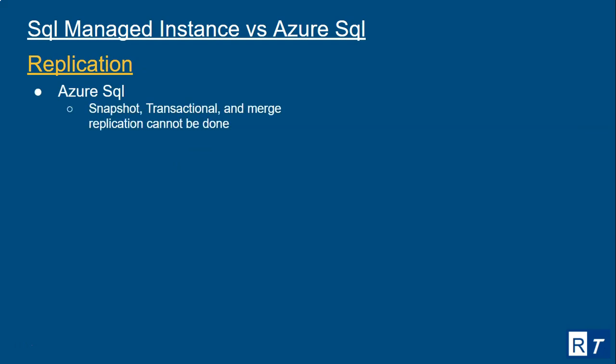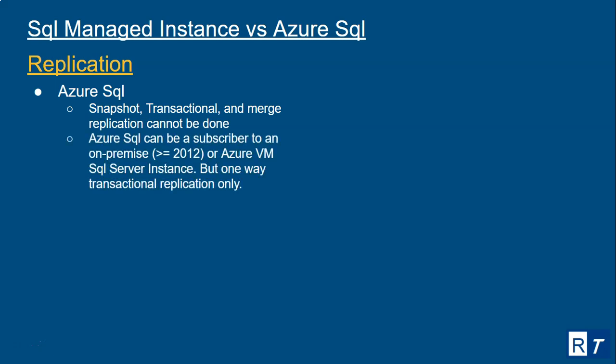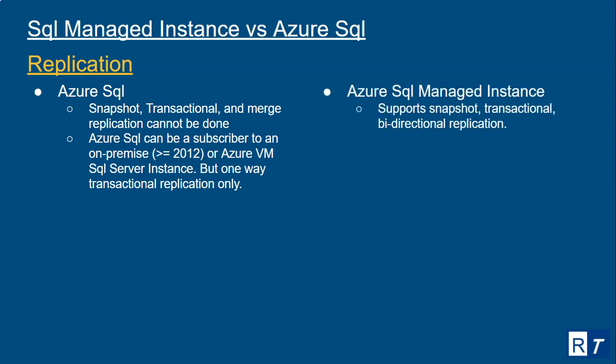For replication: Azure SQL Database does not support snapshot, transactional, or merge replication. Azure SQL Database can be a subscriber to an on-premise SQL Server — where the SQL Server version should be greater than or equal to 2012 — or to an Azure VM SQL Server instance, but this is one-way transactional replication only. For Azure SQL Managed Instance, it supports snapshot, transactional (bi-directional), and merge replication. Peer-to-peer replication and updatable subscriptions are not supported.